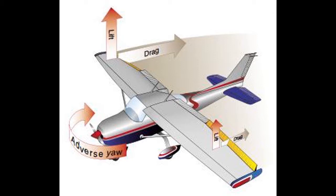In that process, the down aileron has more drag — it has lift too, but it has more drag than the other side. That translates to an aircraft that will seem to go left before it goes right.